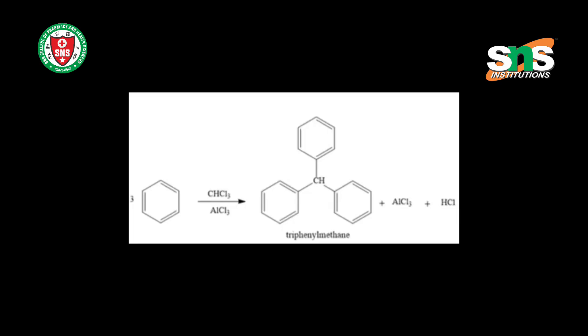We will now discuss tri-phenyl methane. We know the structure of methane, CH₄. If you remove 3 hydrogen atoms from methane and add 3 phenyl groups, the resulting compound is known as tri-phenyl methane. Tri-phenyl methane has the molecular formula (C₆H₅)₃CH.